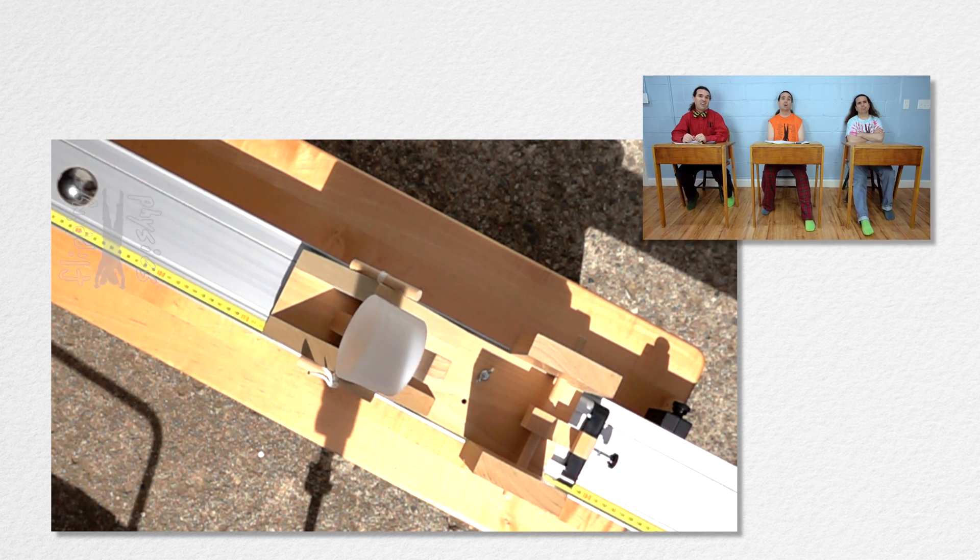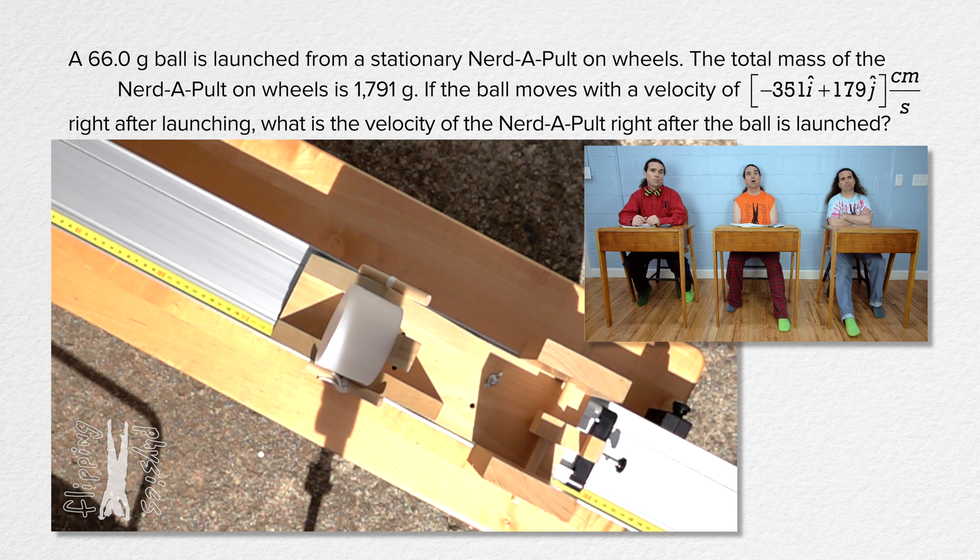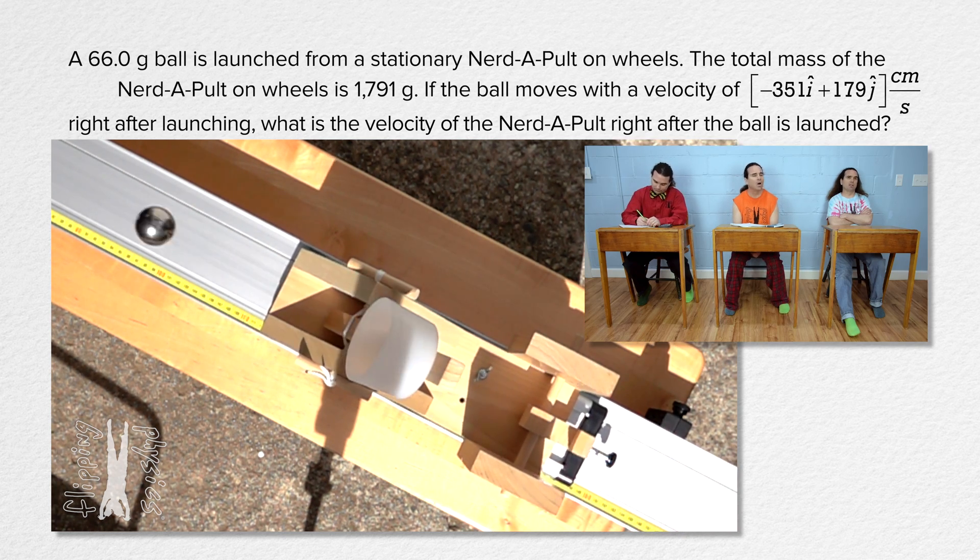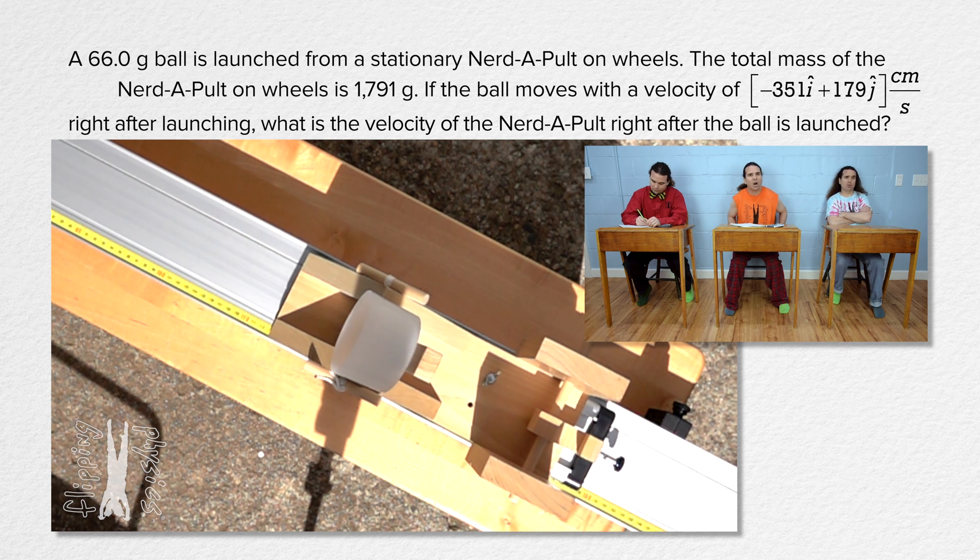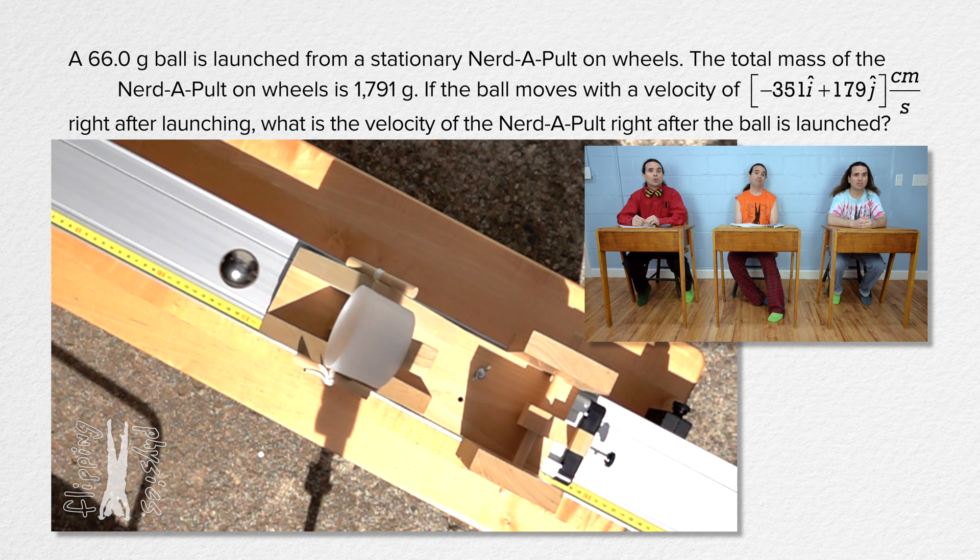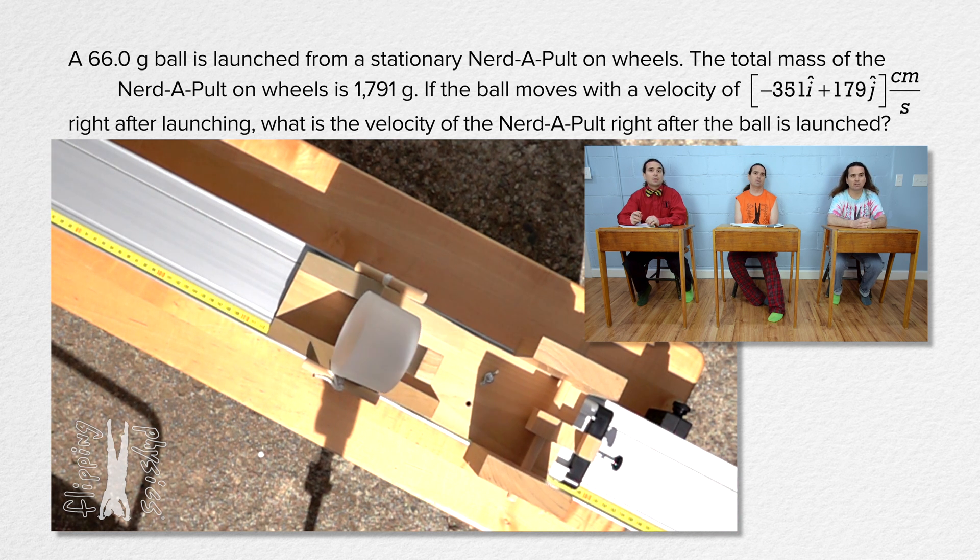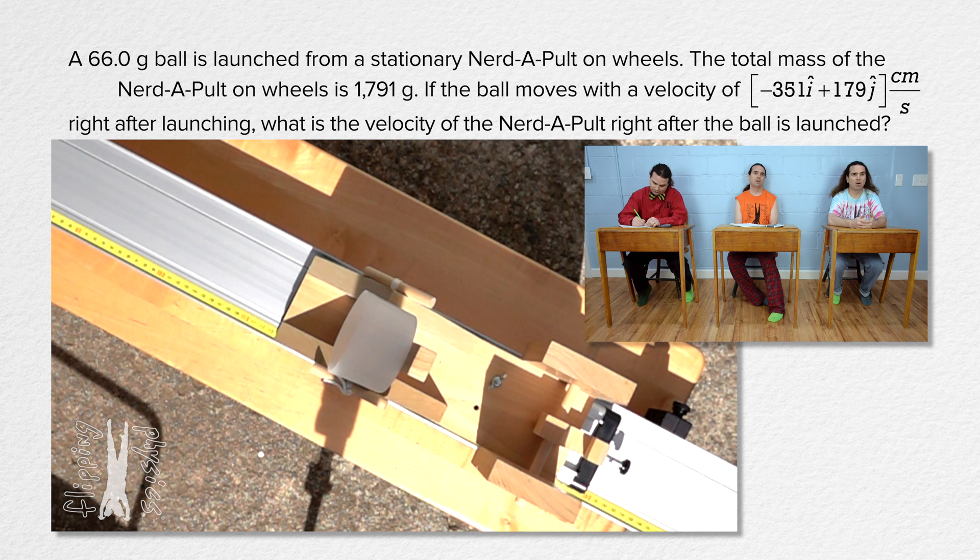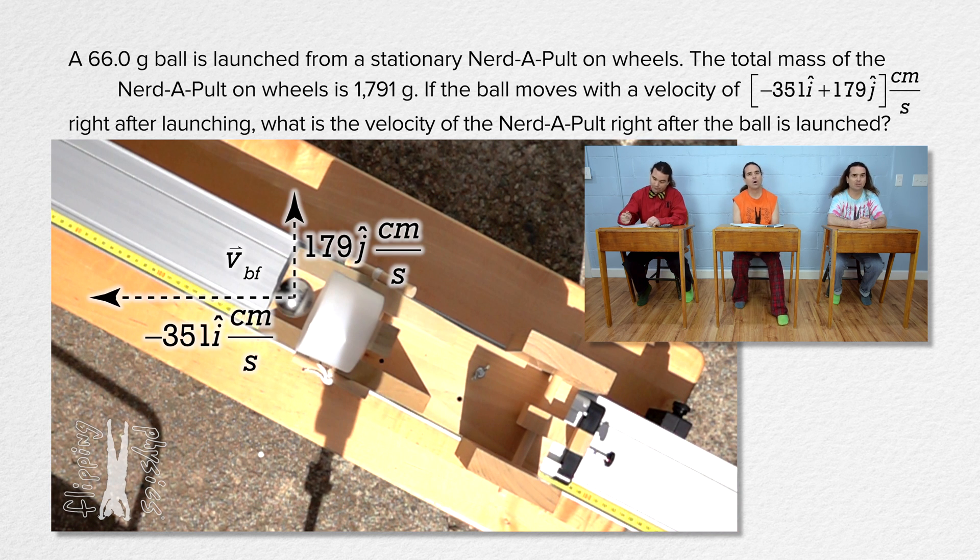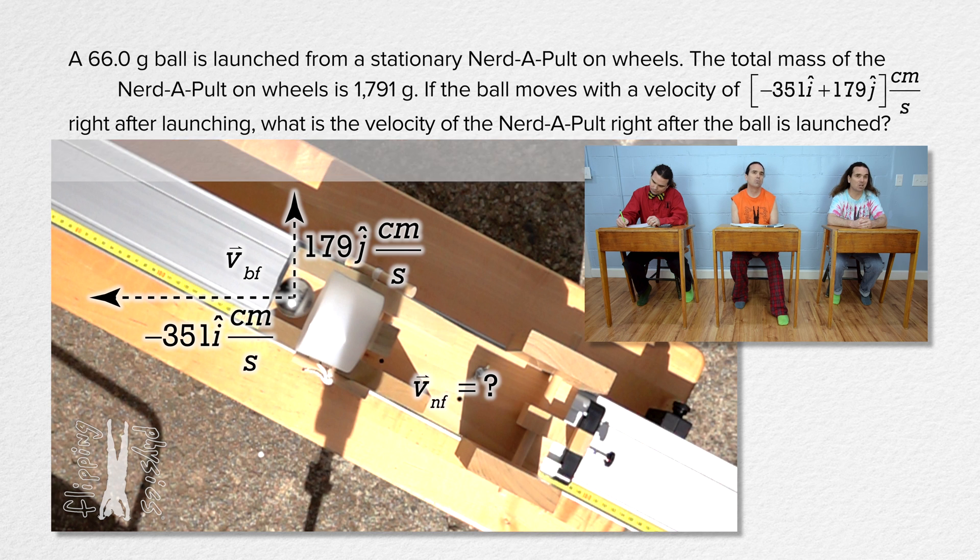Right. Bo, please read and Bobby, please translate the problem. A 66.0 gram ball is launched from a stationary Nerdapult on wheels. The total mass of the Nerdapult on wheels is 1791 grams. If the ball moves with a velocity of negative 351i plus 179j centimeters per second right after launching, what is the velocity of the Nerdapult right after the ball is launched?